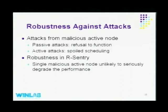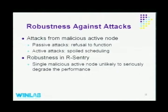Regarding robustness against malicious attacks: passive attacks have the active node simply not provide any service to the network, which can be treated like a failed node. For active attacks, a malicious node sends a spoiled schedule to disrupt network service or decrease network lifetime. However, because redundant nodes follow schedules from multiple active nodes, a single malicious active node is not sufficient to seriously degrade performance. Only when a redundant node is surrounded by several malicious nodes can the attack take effect in R-Century.